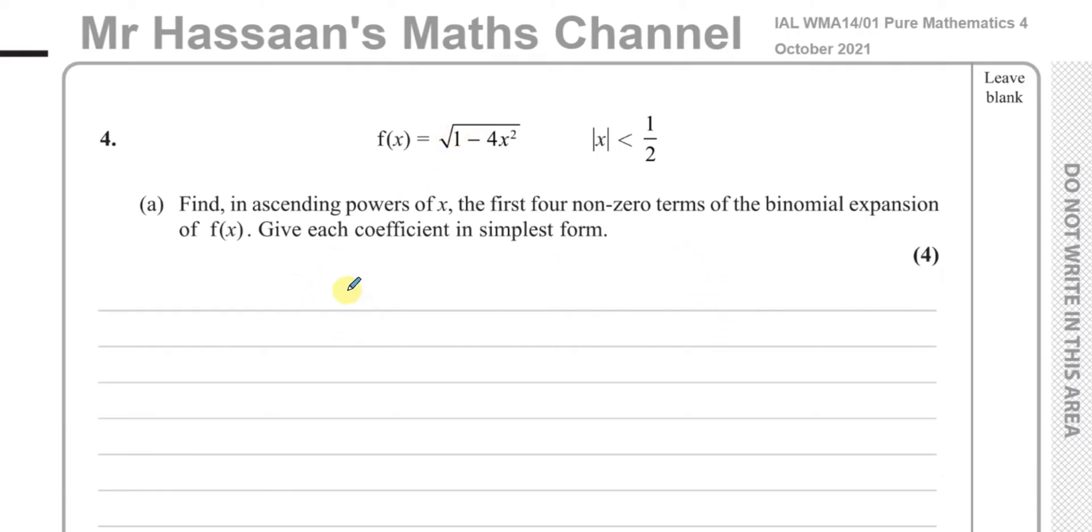When you're going to expand something like this, first of all, we need to express it in index form. So the square root of something is the same as that same thing raised to the power of a half. Now when we have something like this, we cannot use the same methods that we used in P2, where you have positive integer powers. You cannot use the nCr button in your calculator for this. So we have to use the formula.